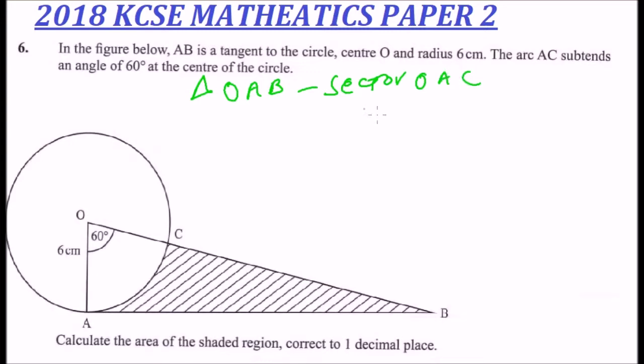For us to do that, we need to find AB. We have this angle here, the tangent makes an angle of 90 degrees with the radius, so we can get AB by using the tangent. We say the tangent of 60 degrees is equal to the opposite side, which is AB, divided by the adjacent, which is the radius, which is 6.